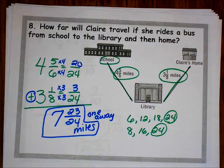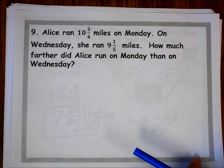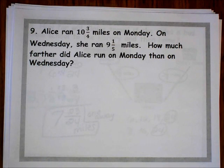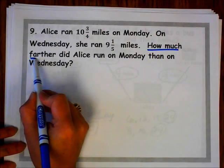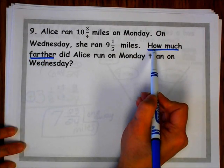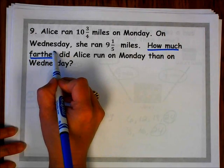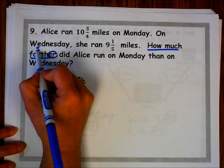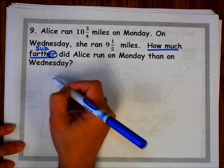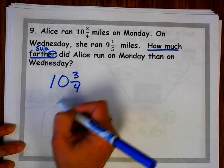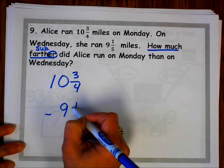Let's do one more problem together. Remember my key words: when I have the words 'how much' or 'how many' followed by a word that ends in '-er,' it's always going to be a subtraction problem. So I put my largest fraction on top: 10 and 3 fourths minus 9 and 1 fifth.